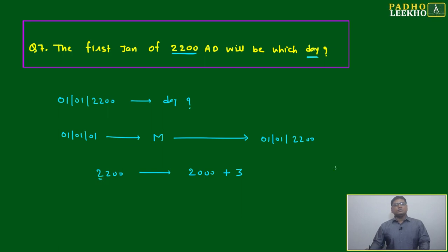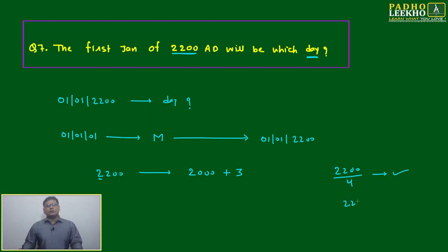Is it leap year, 2200? If you are dividing by four, it is divisible, yes. But 2200 divided by 400, is it divisible? No. Means 2200 is a non-leap year. That we have to keep in mind.